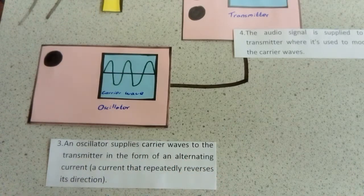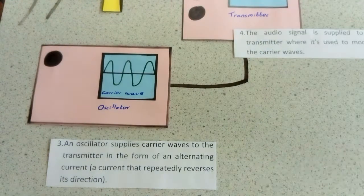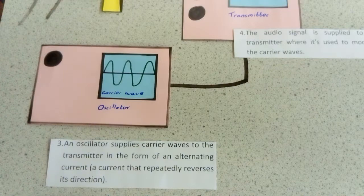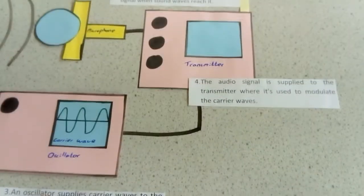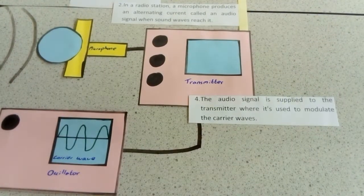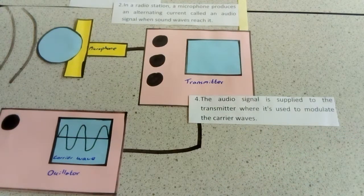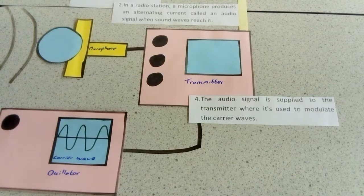An alternating current is going backwards and forwards relatively quickly. The audio signal is supplied to the transmitter where it's used to modulate the carrier wave. This alters the carrier wave.